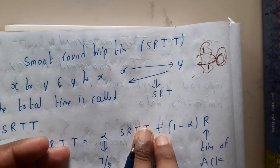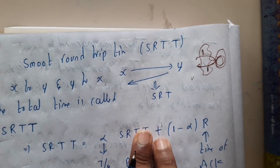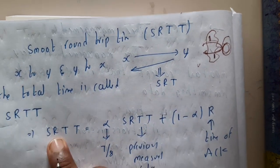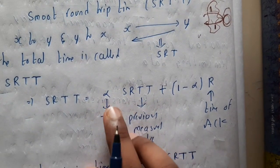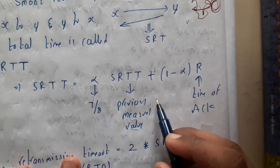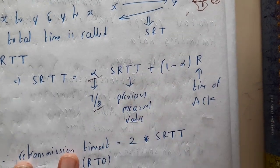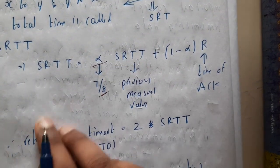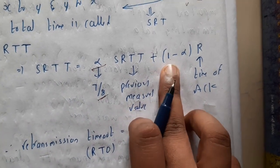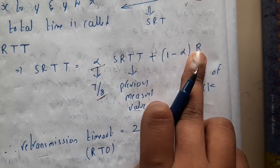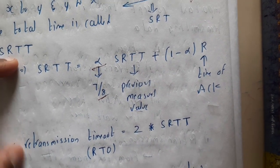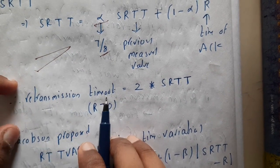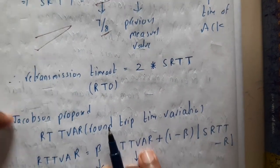We cannot say that every packet will return in exactly the same time, so SRTT alone is not reliable. The formula is: SRTT = α × SRTT + (1 − α) × R, where α is most commonly 7/8 and R is the time taken to get the acknowledgement. The decision of time is based on the previous SRTT value. To be safe, we multiply by two, calling it the retransmission timeout.